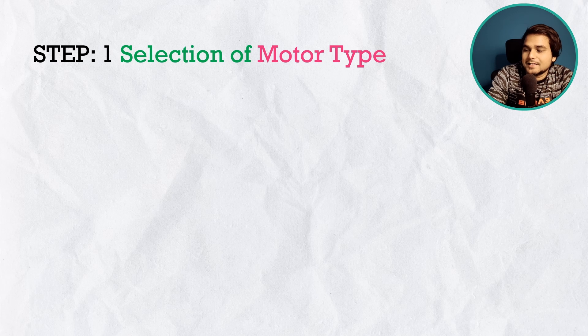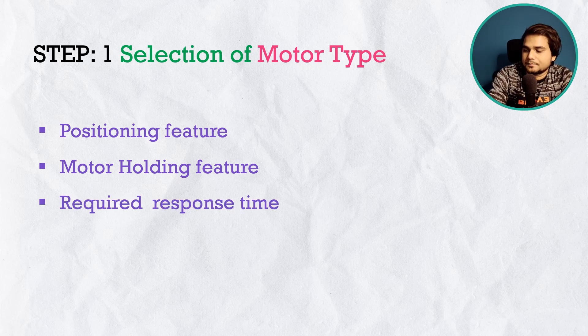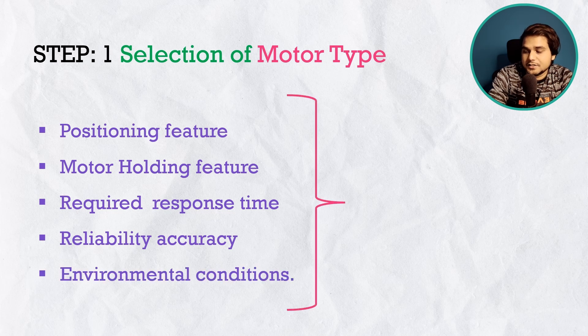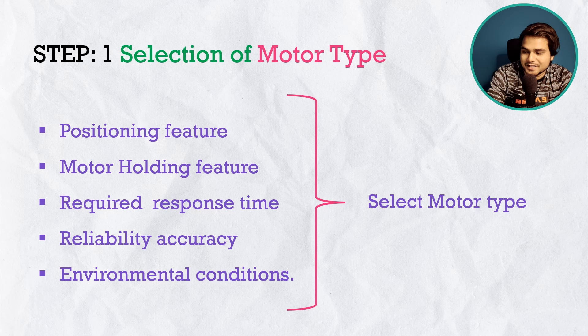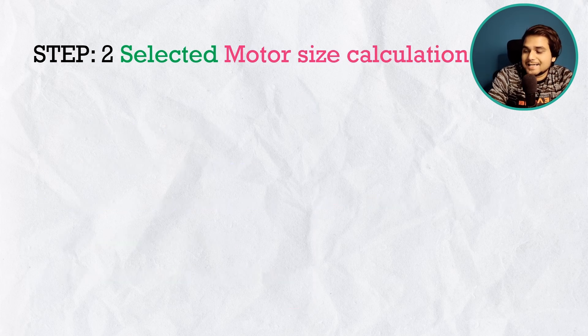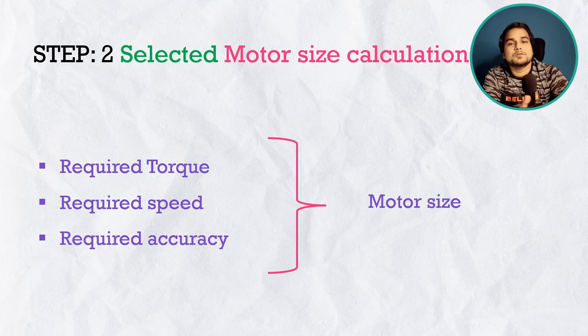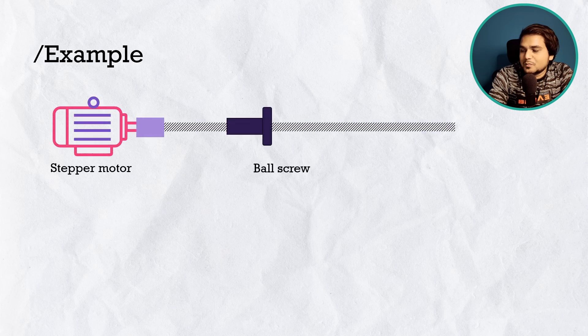For motor selection, first list down the required features of your system: positioning, motion holding, required response time, repeatability, accuracy, and environmental conditions. Based on these feature requirements, select the motor type, then select the specific motor size based on required torque, speed, and accuracy for your mechanical system — whether it uses a ball screw, gearbox, timing belt, or anything else. We cannot select a motor without knowing our system's required parameters.